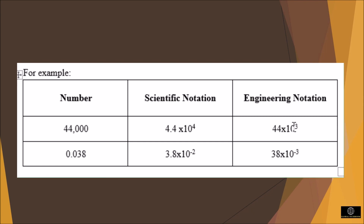Now consider the number 0.038. In scientific notation, it is represented as 3.8 × 10⁻², where 3.8 is between 1 and 10 with one digit to the left of the decimal point. In engineering notation, the same number is represented as 38 × 10⁻³, where 38 has 2 digits and the exponent −3 is a multiple of 3.